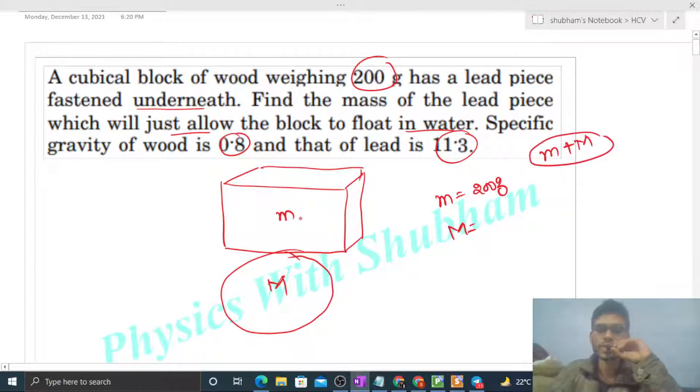So that ye jo system, let me define my system. I am taking my system as small m plus capital M. So ye jo system hai ye just float karta hai. Just float means ye jo poora system hai water ke andar hoga and float karega. The entire system will be inside the water and ye float karega.